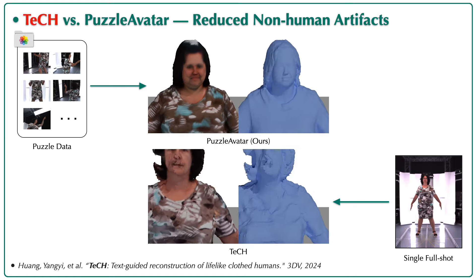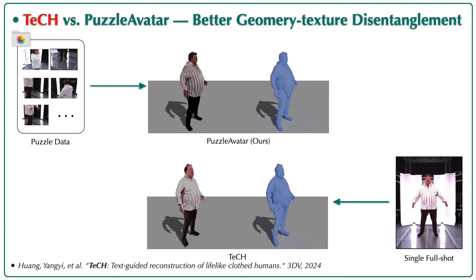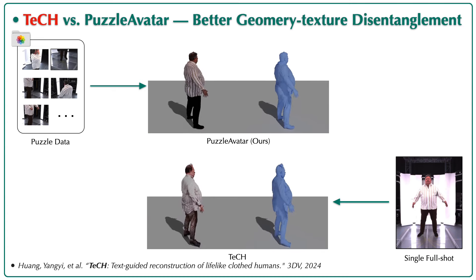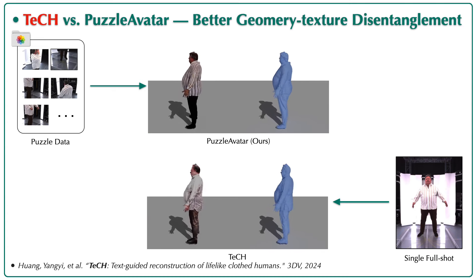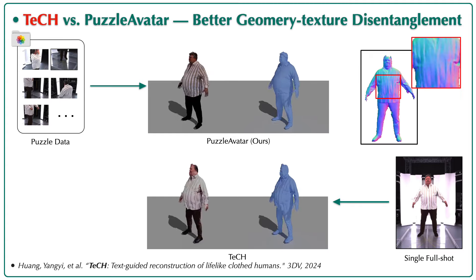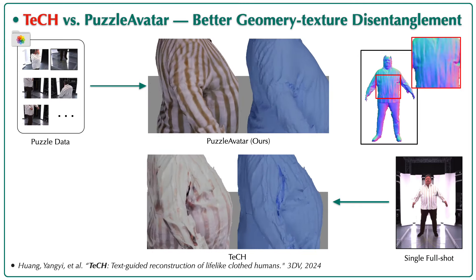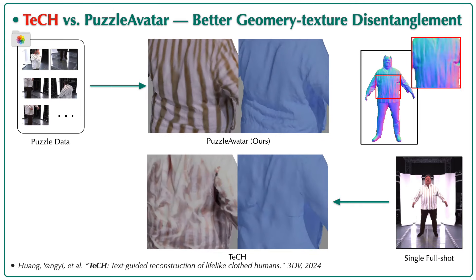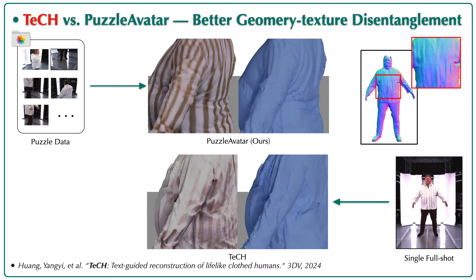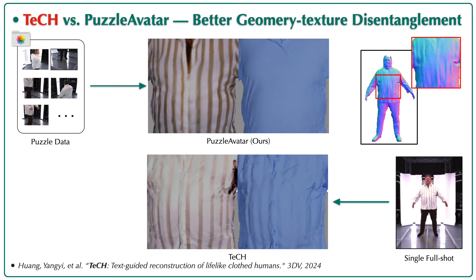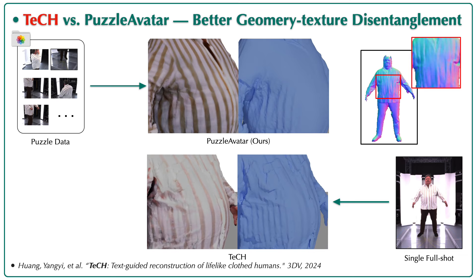For similar reasons, Puzzle Avatar excels in separating shirt stripes compared to Tech. In the top right corner, we show a typical example of flawed normal maps where the stripes are baked onto the geometry. As Tech takes this normal as input, the stripes appear on the reconstructed surface.